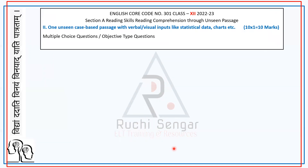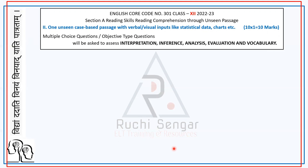For the case-based passage in class 12, the competencies are interpretation, inference, analysis, and evaluation — higher order. A case-based factual passage does not mean you just pick something and attach topically related data. No, it needs to literally have a case — there has to be a problem being addressed, a purpose, what the studies reveal, the results, the hypothesis. So you need to ensure that you create it properly.